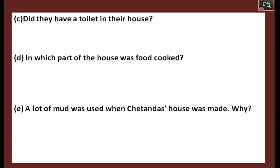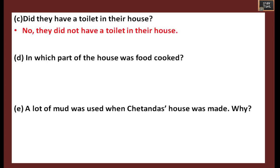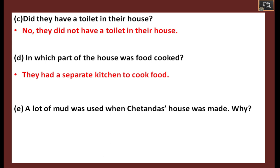They did not have a toilet in their house. Ask in which part of the house food was cooked. They had a separate kitchen to cook food, but in some previous houses they might not have had a separate kitchen - they might have had only one room which served as the kitchen.